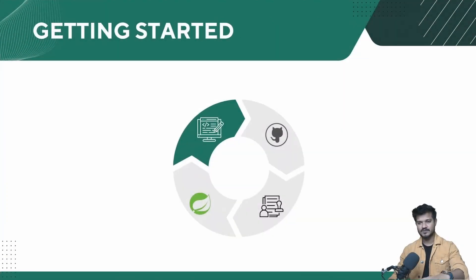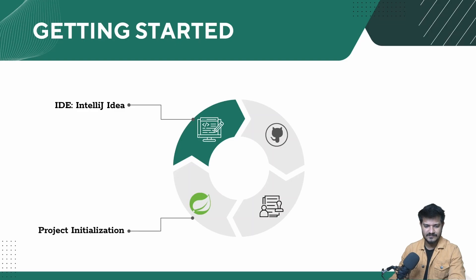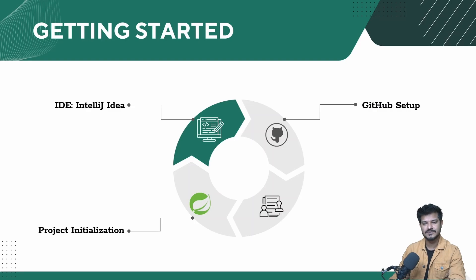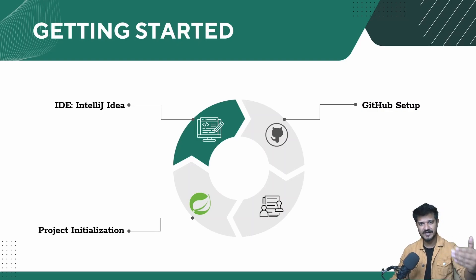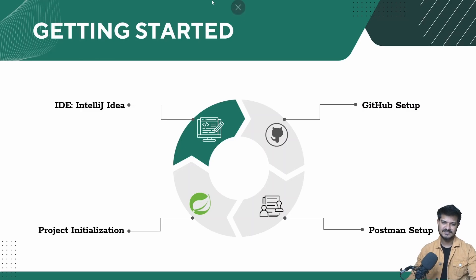So let's see what we are going to set up in this lecture. First, we'll set up the IDE — we'll be using IntelliJ IDEA Community Edition, which is free. Then we'll do the basic project initialization for Spring Boot, followed by the GitHub project setup. All of the project will be available on GitHub. We'll also set up Postman, which we'll use for testing our APIs and end-to-end testing.